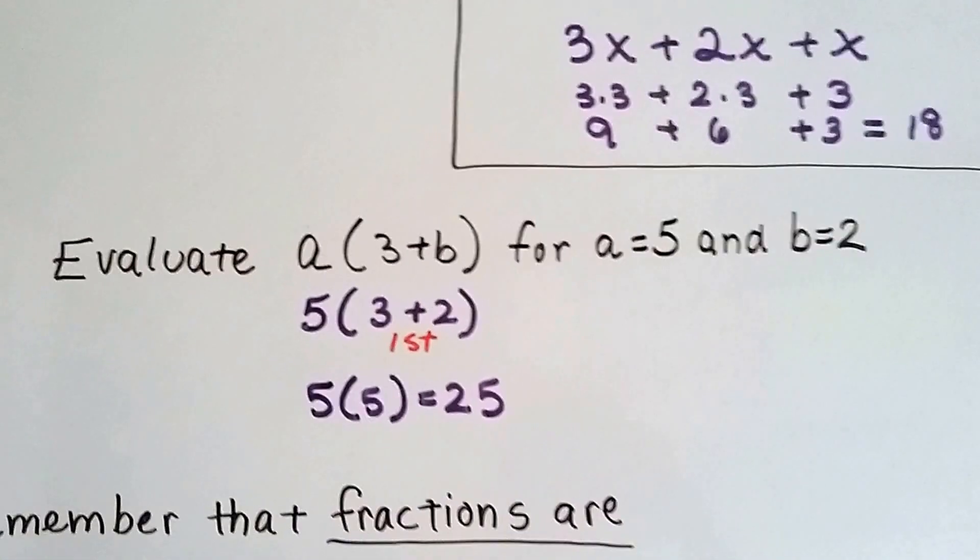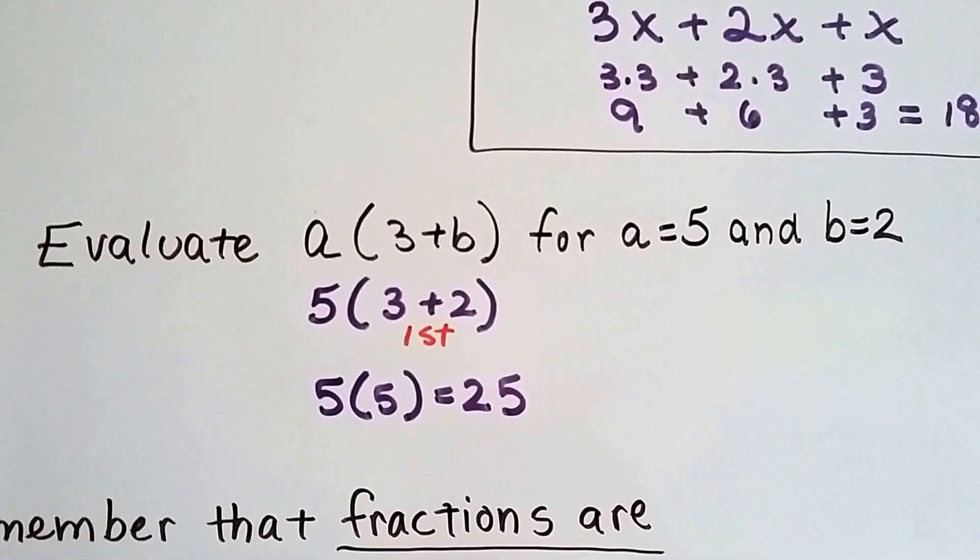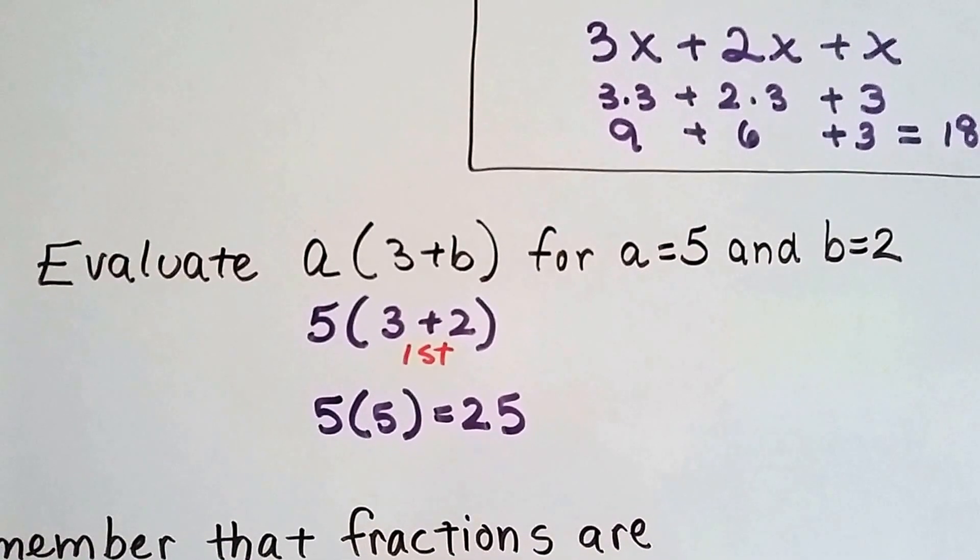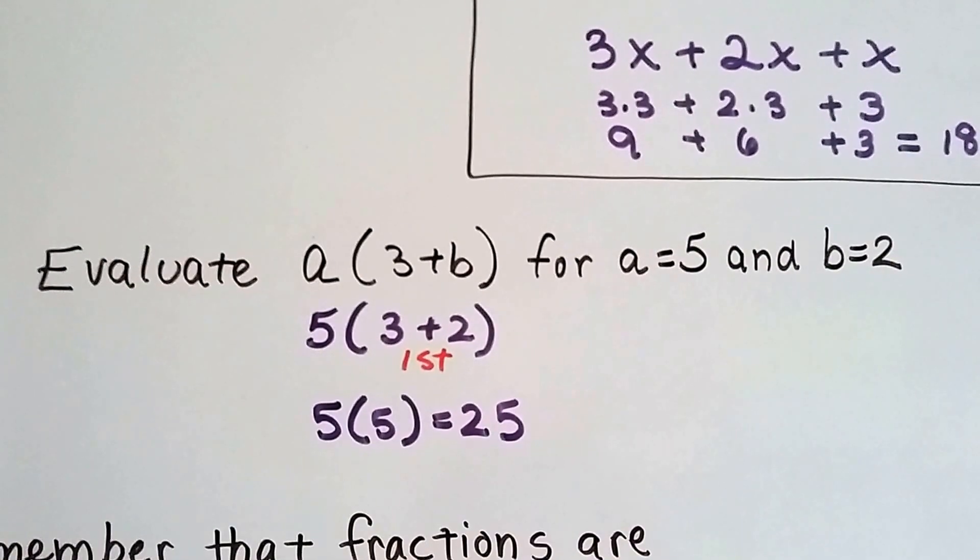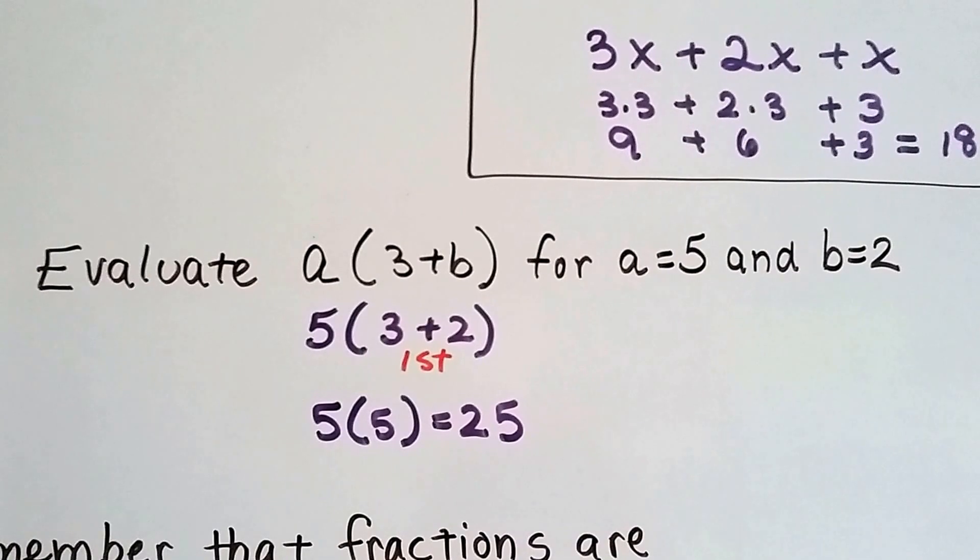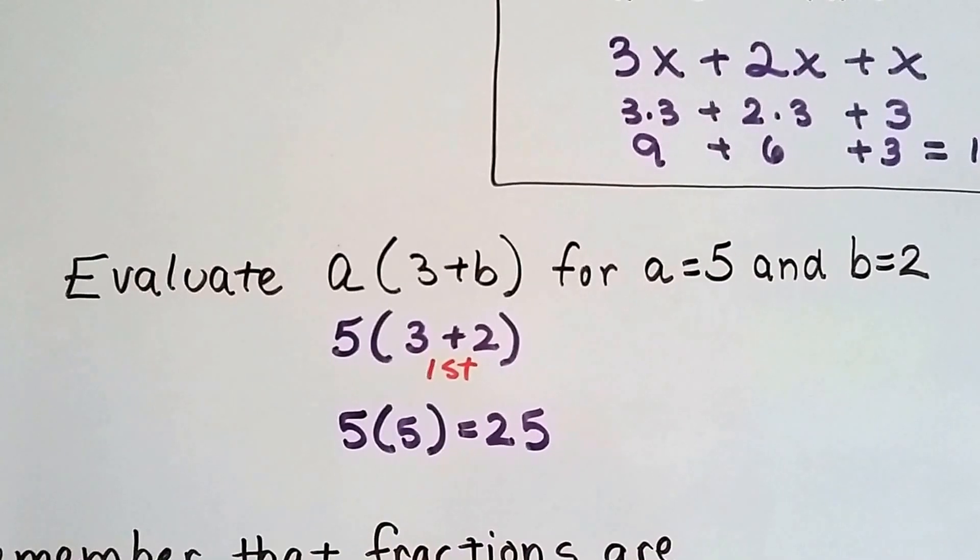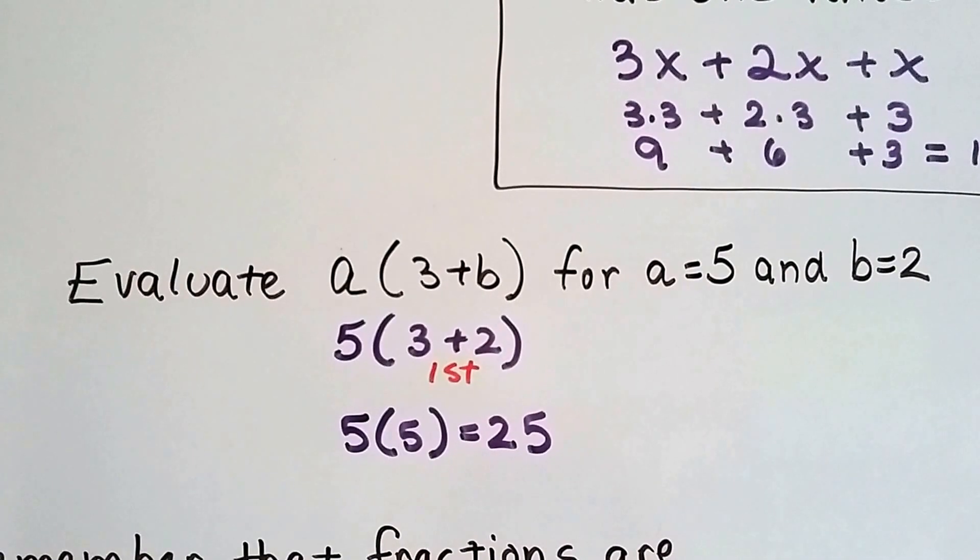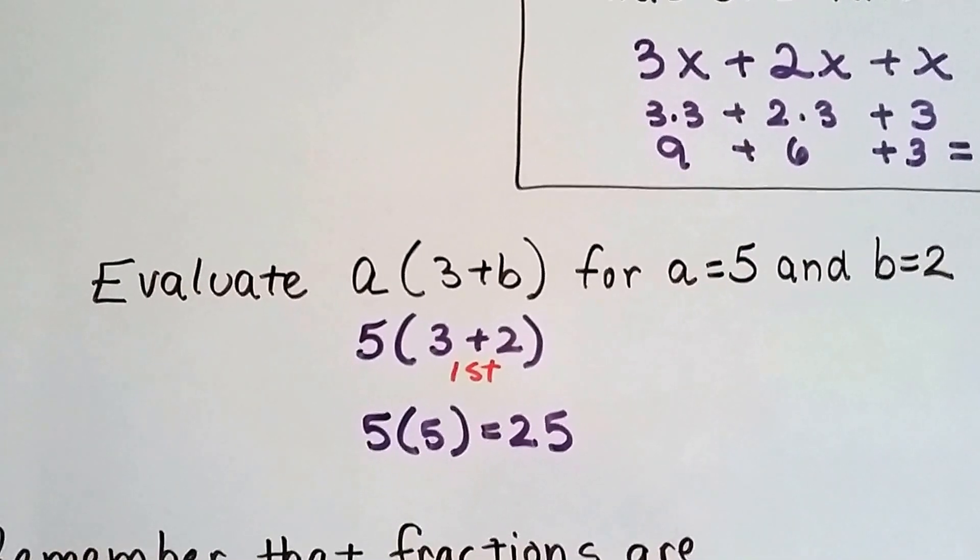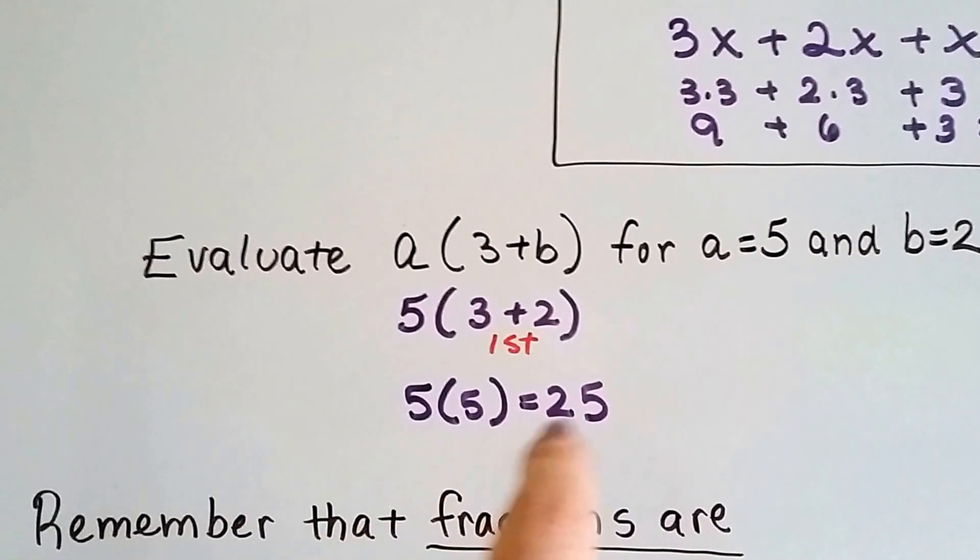If we're told to evaluate a times (3 plus b) in parentheses, and a equals 5 and b equals 2, we just plug in the 5 and the 2 where the a and b are, and we get 5 times (3 plus 2) in parentheses. We do the parentheses first. 3 plus 2 is 5, so we end up with 5 times 5, which is 25.